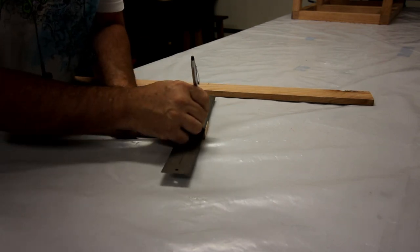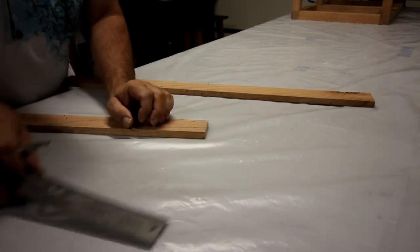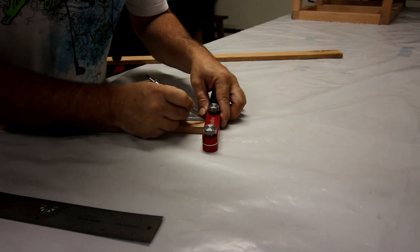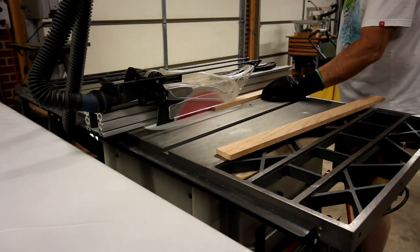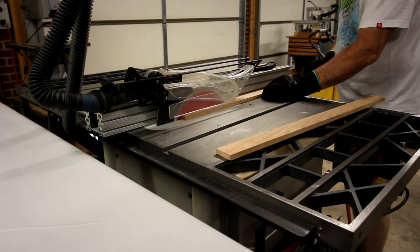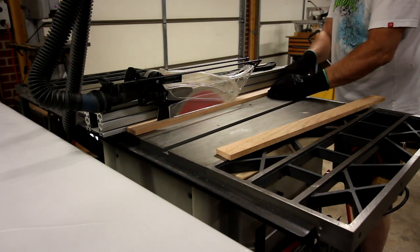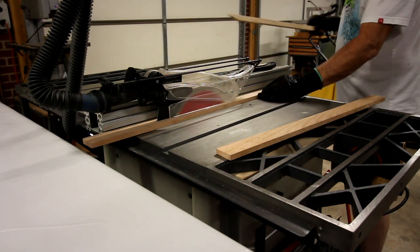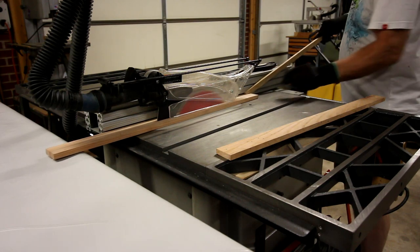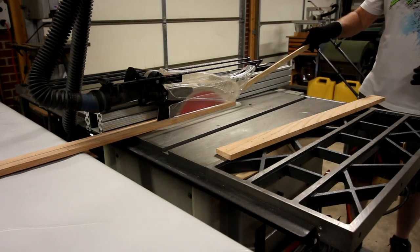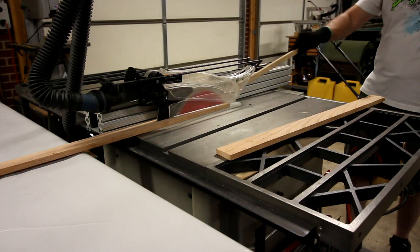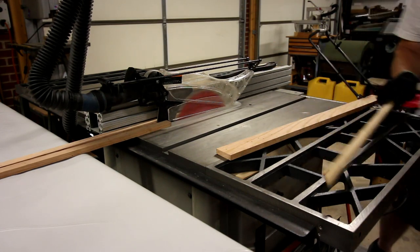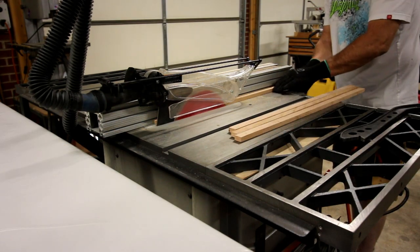So I need to make some little shelf supports that can bridge the gap between the center support and the outside for the shelves. Because the material is kind of thin, if you put any weight on it, it might bow. So I'm just using some of the cutoff bits left over from trimming everything up and making some supports out of those.